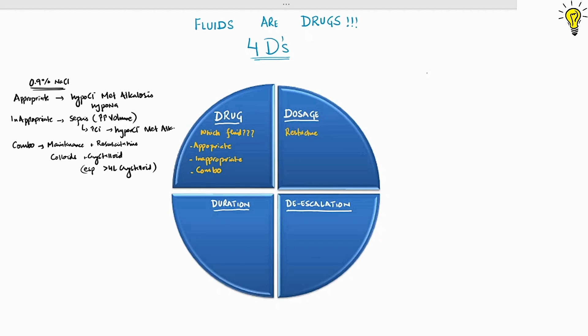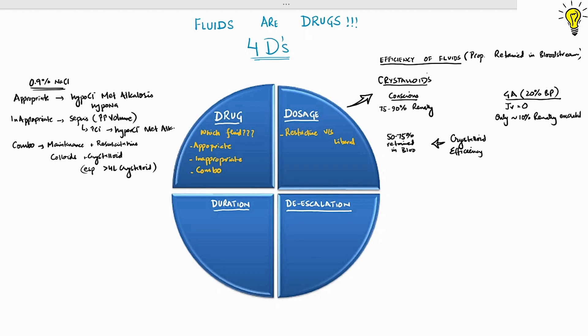For dosage, pharmacokinetics are key. The efficiency of fluid is its ability to retain in the bloodstream. Studies suggest 90% crystalloid is renally excreted in normal conscious patient within 2 hours. But in general anesthesia-induced blood pressure reduction, only 10% crystalloid is renally excreted in the same time frame. So efficiency of crystalloid to be retained in bloodstream increases to 75% and even 100% depending upon context sensitivity.